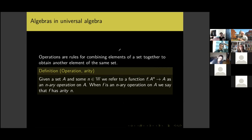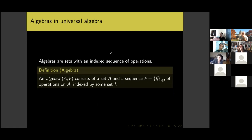We always assume the underlying set for an operation is non-empty. A universal algebra, or just an algebra, is a set A equipped with a sequence of operations — a collection of f_i for i coming from some index set. That's an algebra: a set with a sequence of indexed operations.